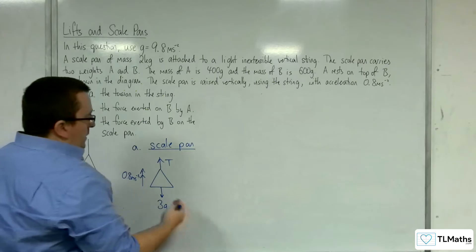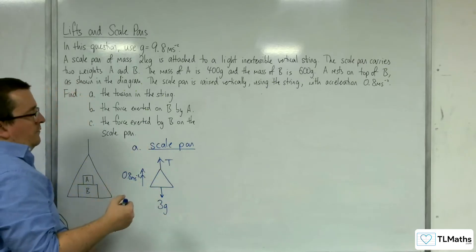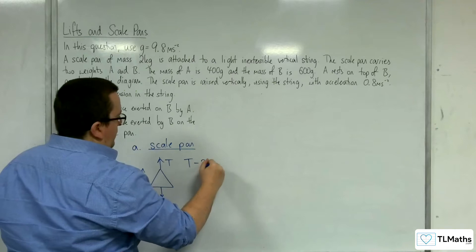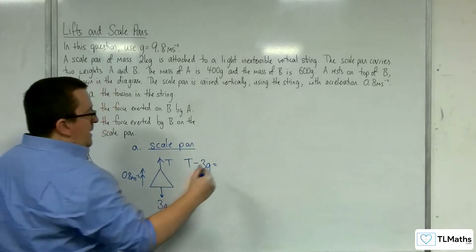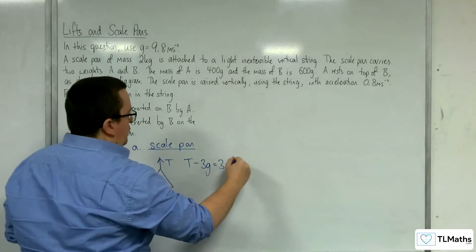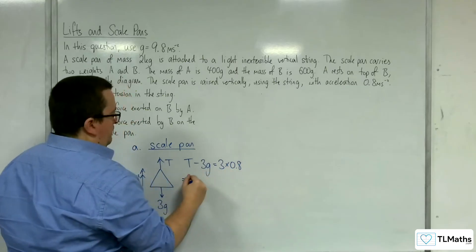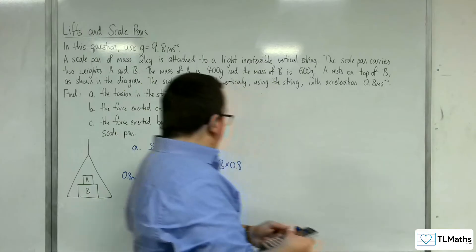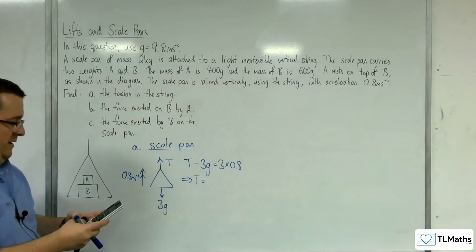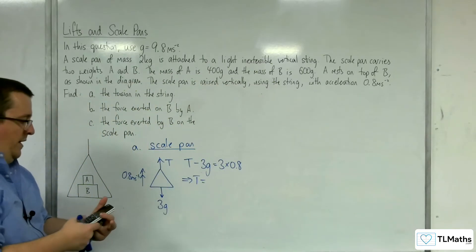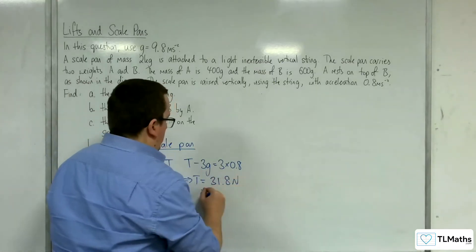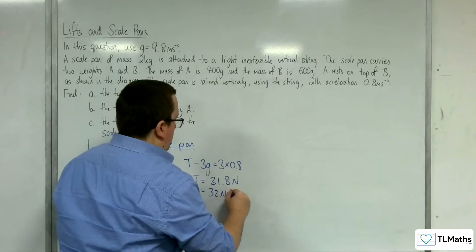So looking at the forces that are working vertically, taking upwards as positive, we've got T take away 3g is equal to the mass 3 times the acceleration 0.8. So we can work out the tension, so 3 times 0.8 plus 3 times 9.8, and we get 31.8 newtons, which is 32 newtons to 2 sig fig.